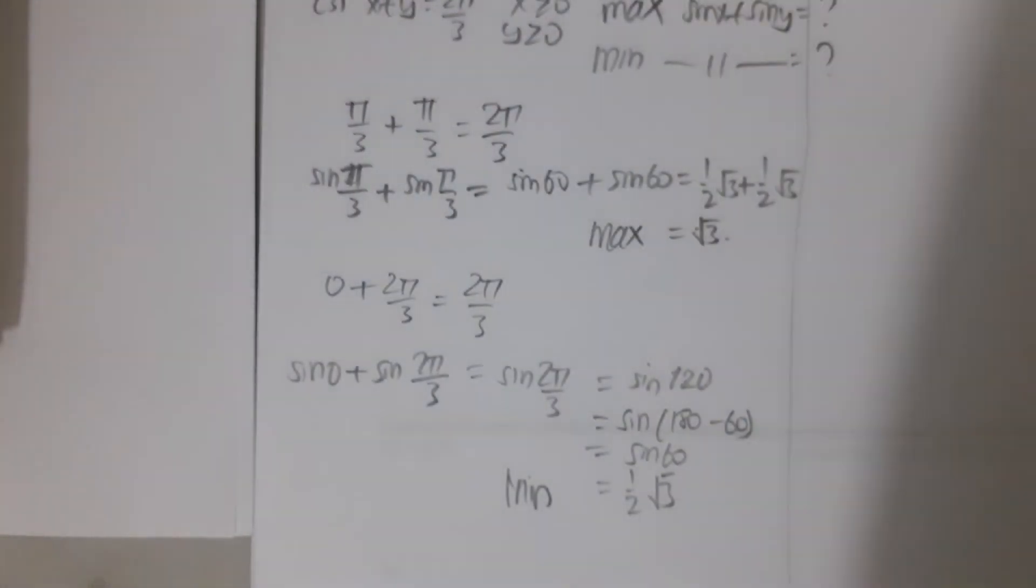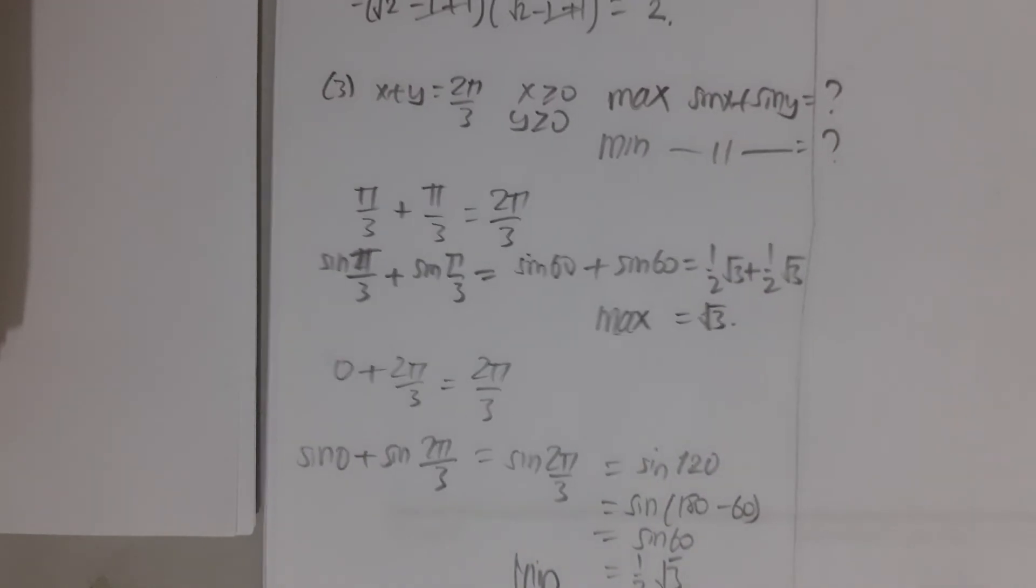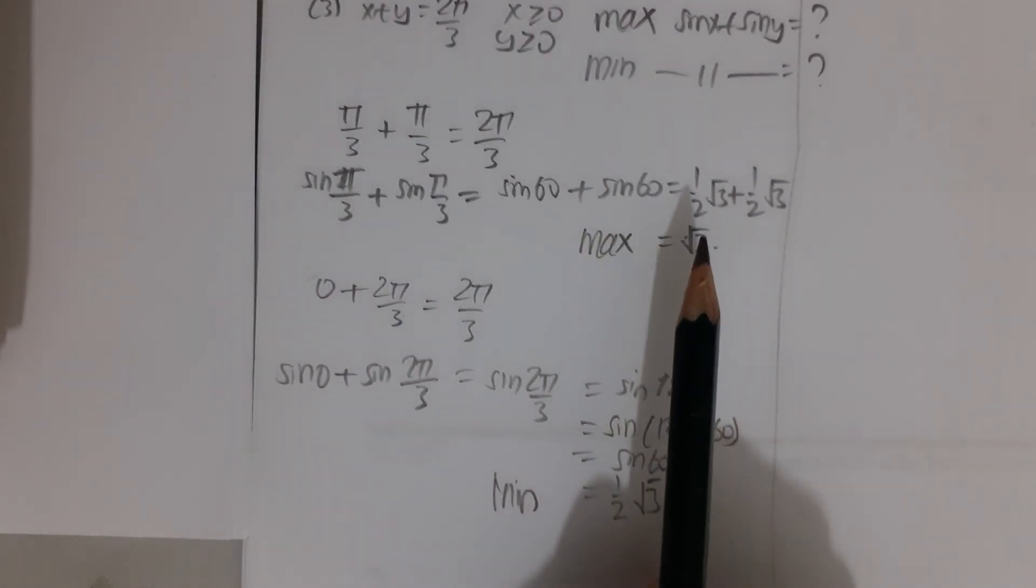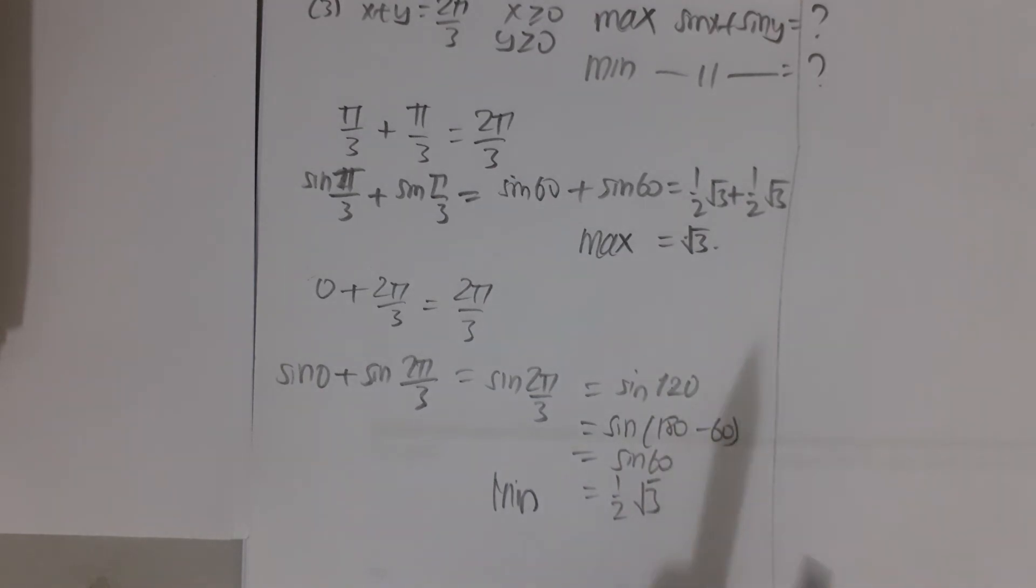So this is the answer to number 3. With x + y = 2π/3, this is the maximum and this is the minimum. In the next video, we're going to discuss number 4. Thank you.